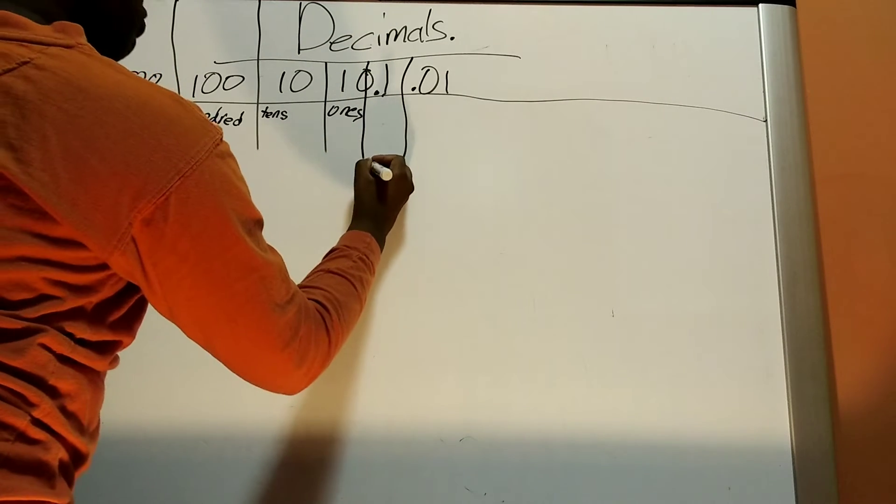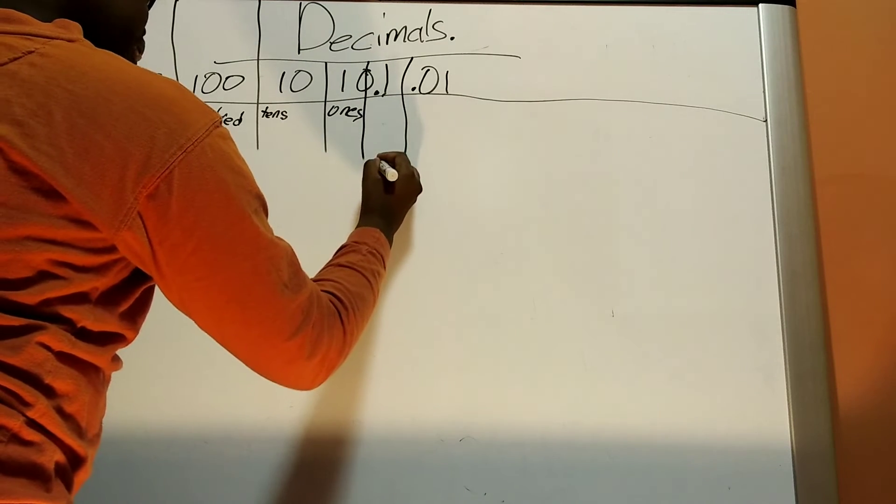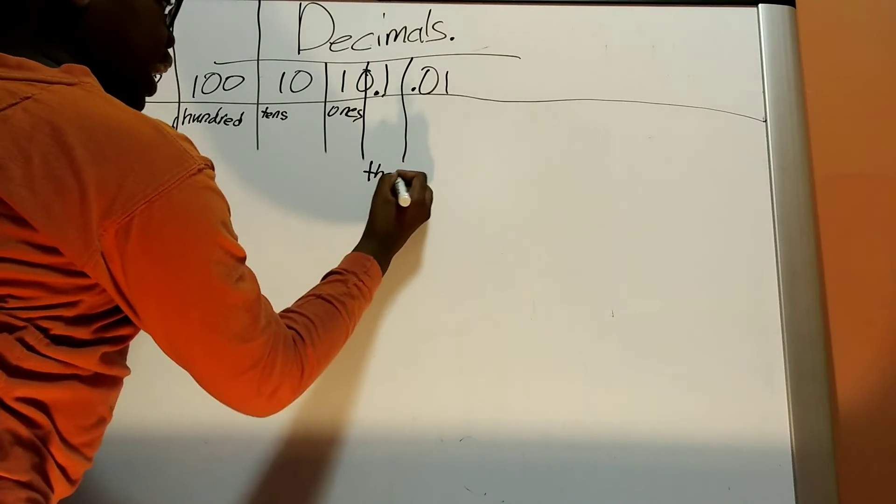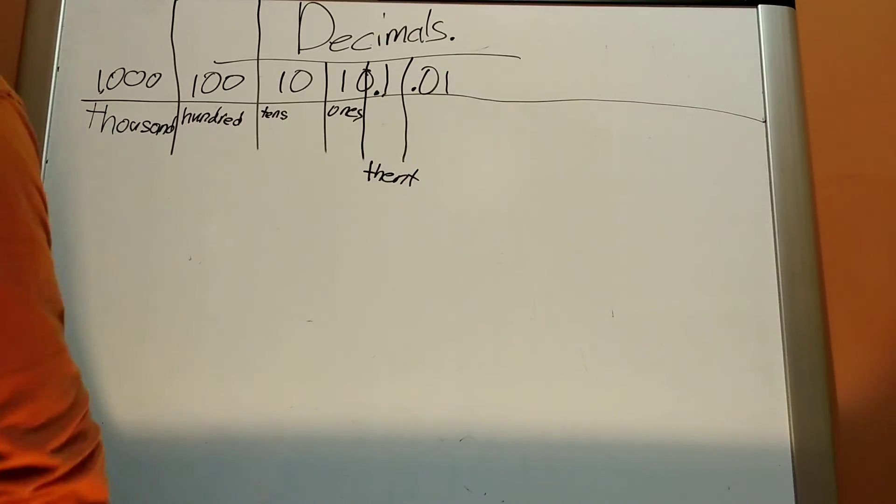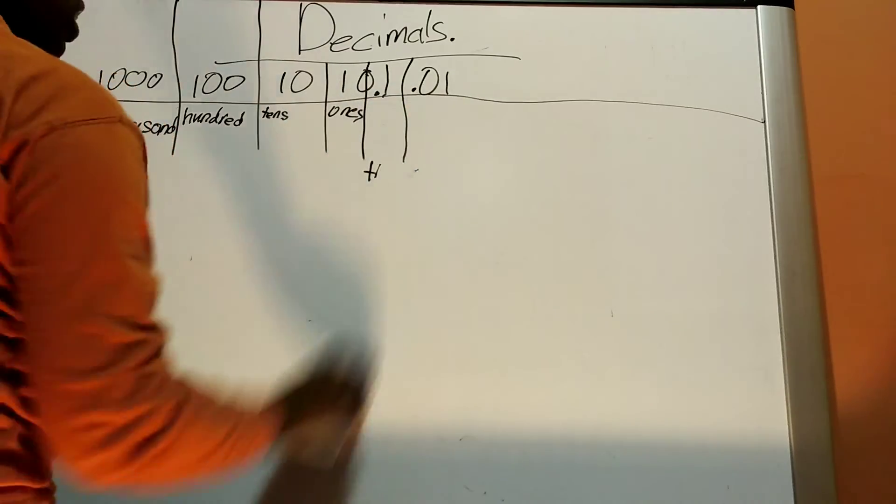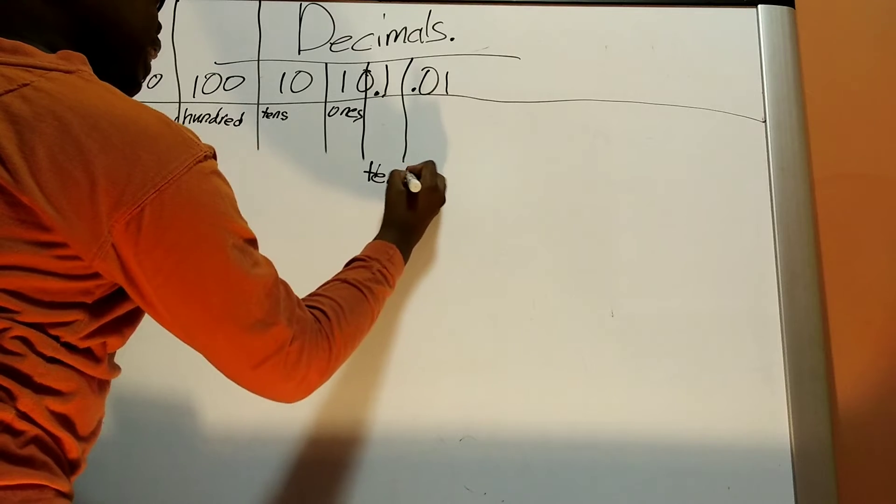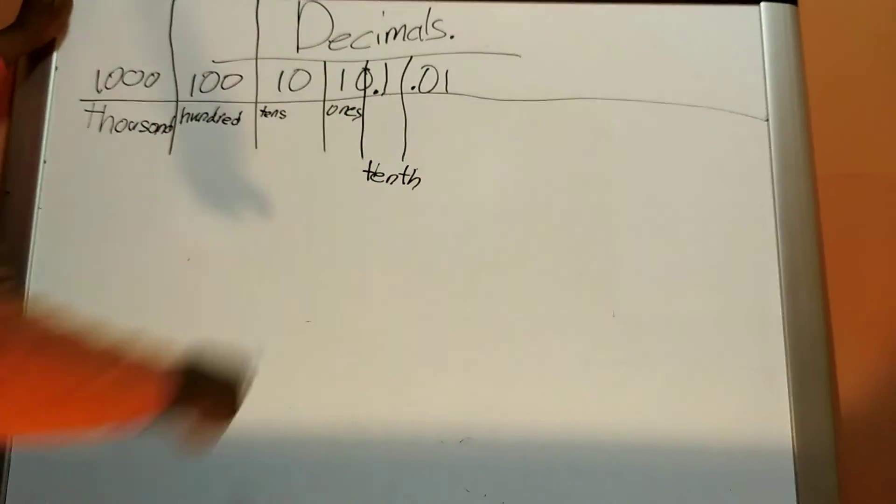This is 1,000, 100, tens, ones, tenths. The difference in the name is that now you have a T-H. You always add a TH to whatever the number is.